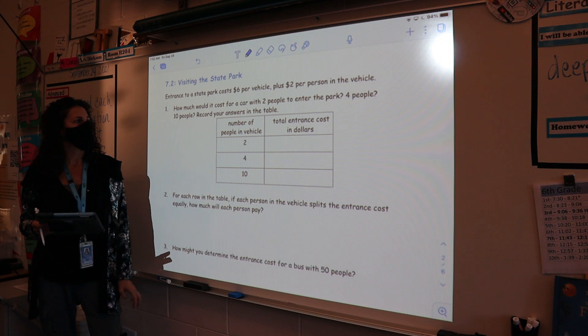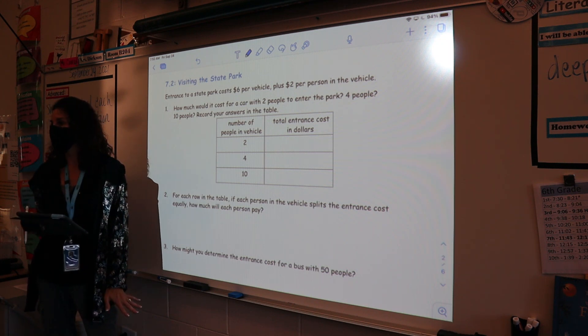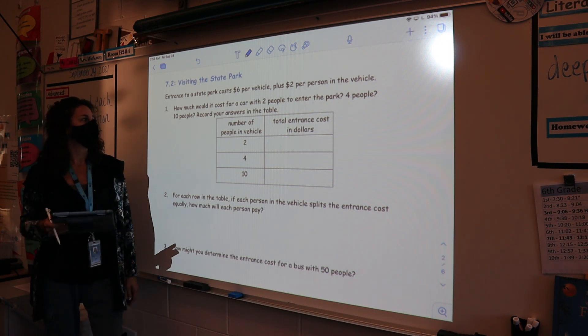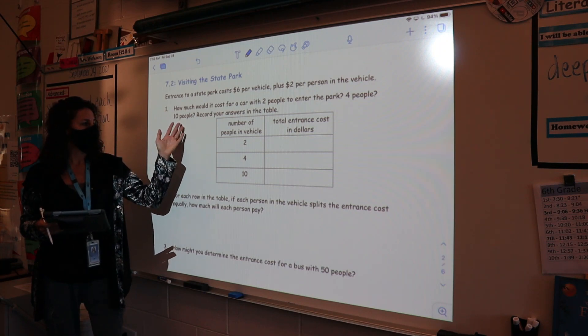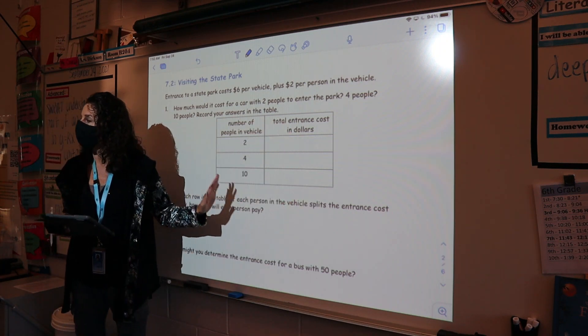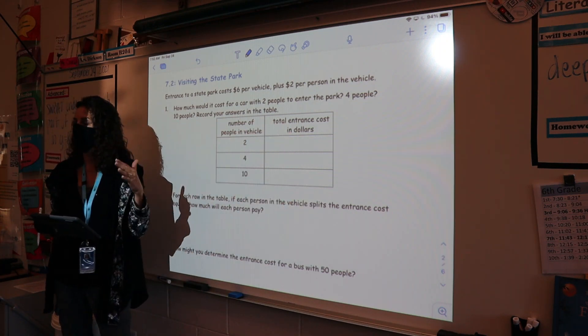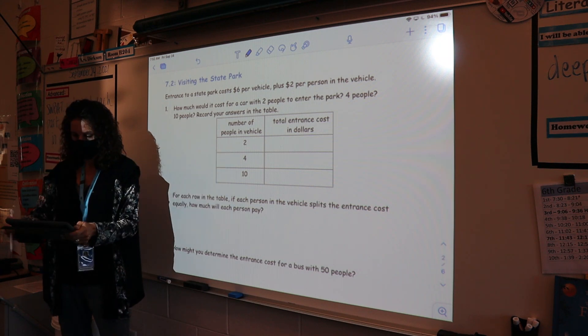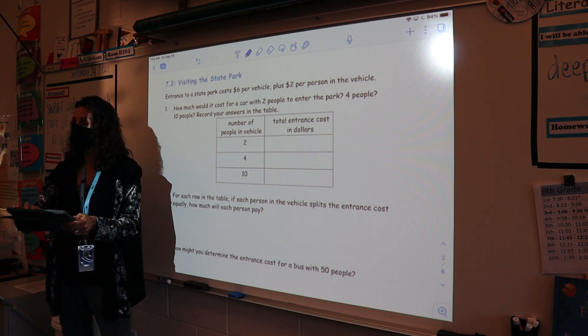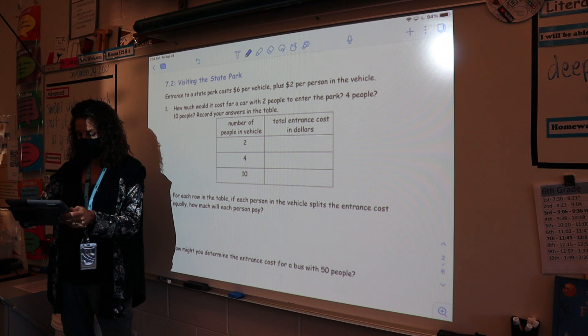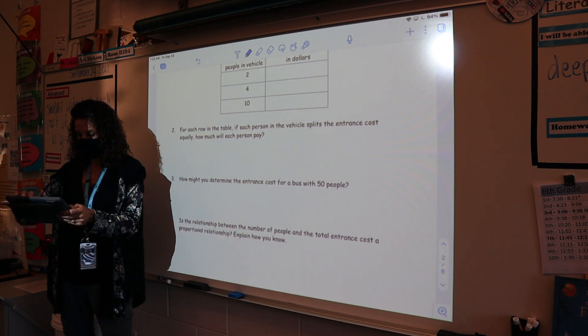Think about how much it would cost for a car with two people to enter the park, how much it would cost for four people and ten people. I want you to record your thinking in the table, and I want to see all the math that you're doing. I want to see that evidenced in the table. And then I would like you to try to answer number two and number three and number four.